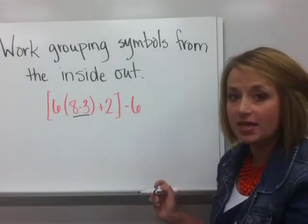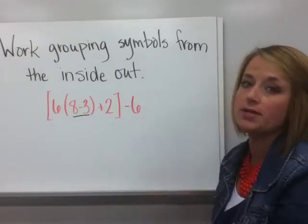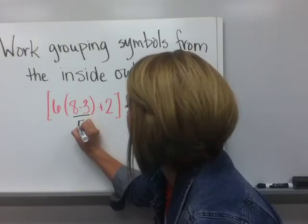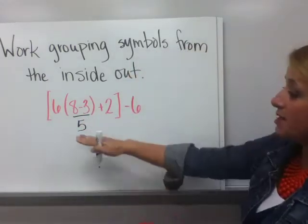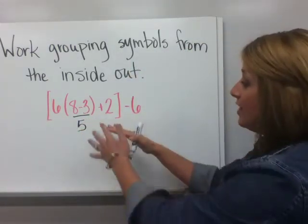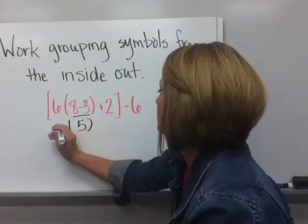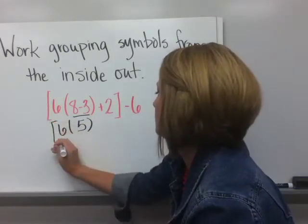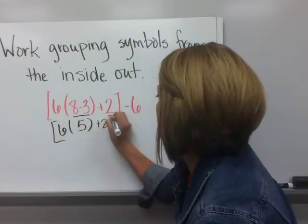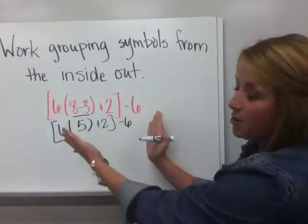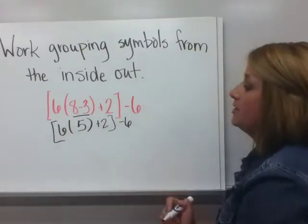I like to do that so that when I'm looking back at this, I can see what step it was that I was working on there. Eight minus three, that's five. Notice I've written five underneath there. And then I'm going to copy down what's left around it. Also notice I'm keeping it centered. It's going to funnel down.